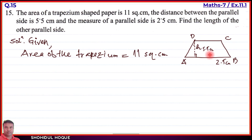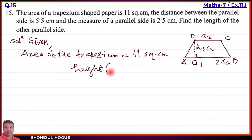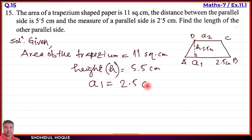The two parallel sides are labeled a1 and a2. The height h is given. Since the area is known and h and a1 are given, we need to find the other parallel side, a2.